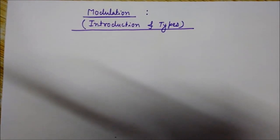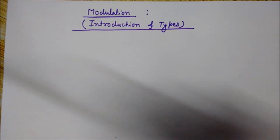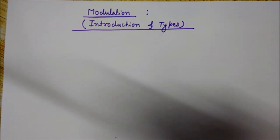Hi friends, you are watching Engineering Made Easy. Today in this lecture we will discuss what is modulation and what are various types of modulation. Modulation is a process by which some characteristic like amplitude, frequency, or phase of a high frequency carrier wave is varied in accordance with the instantaneous value of the message signal. Let's write the definition first.